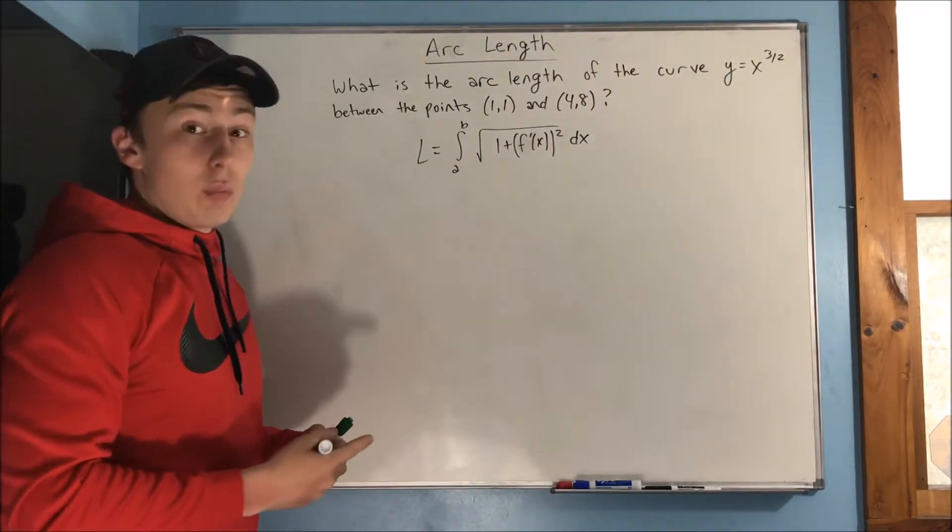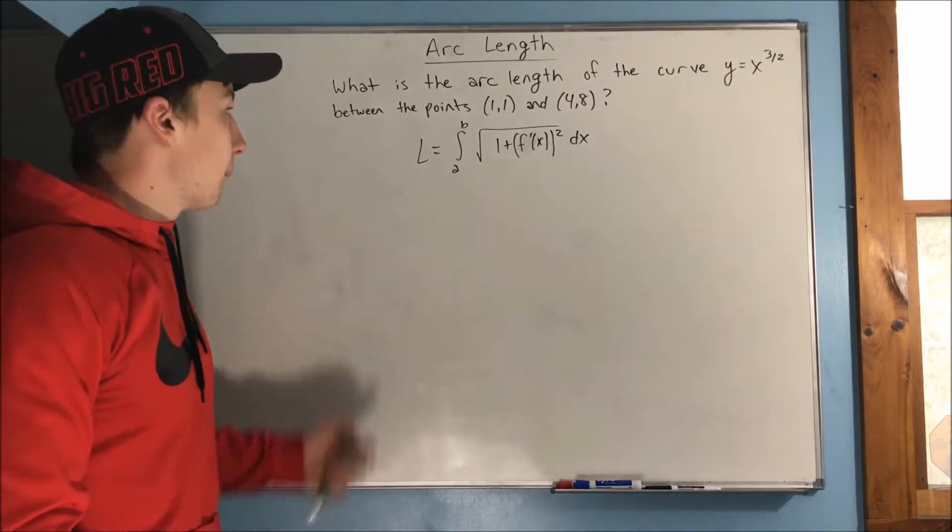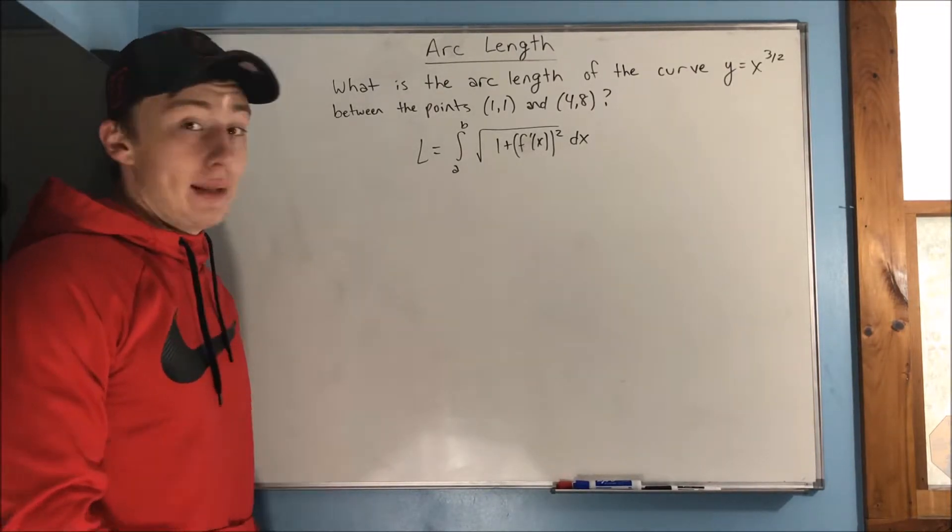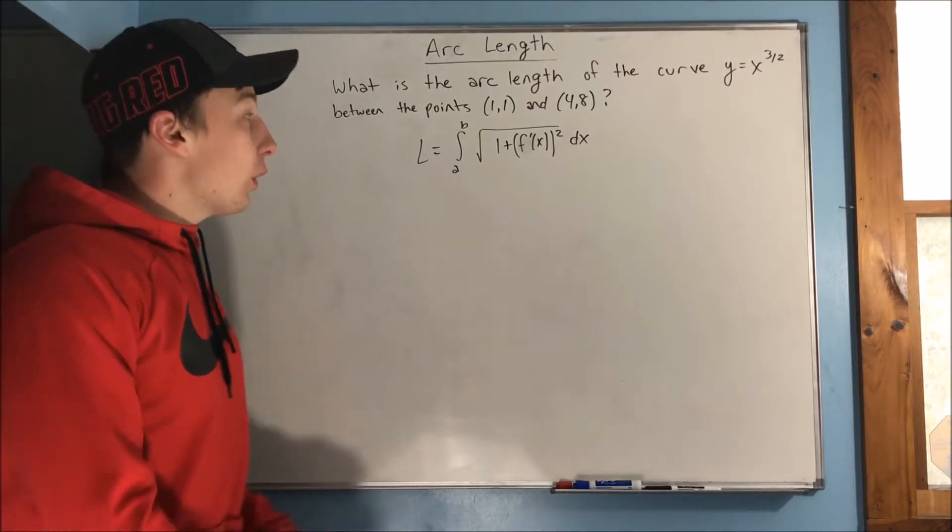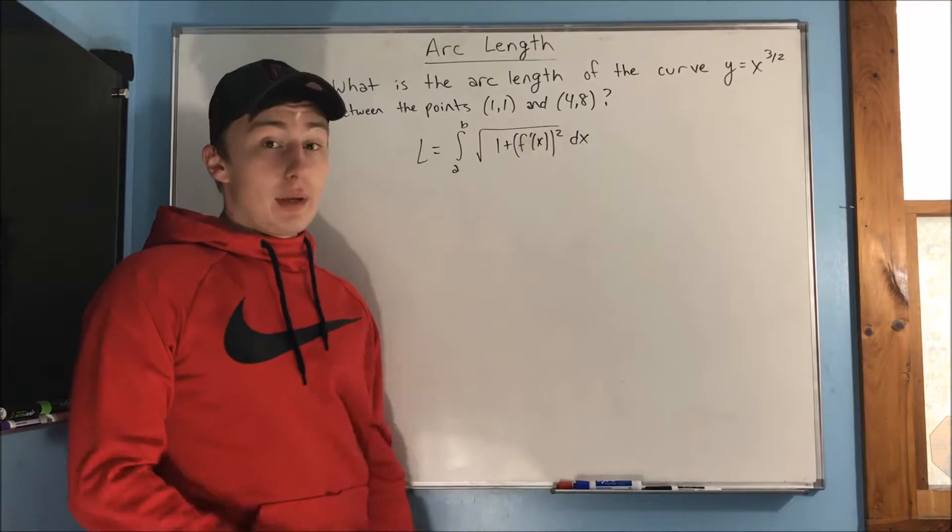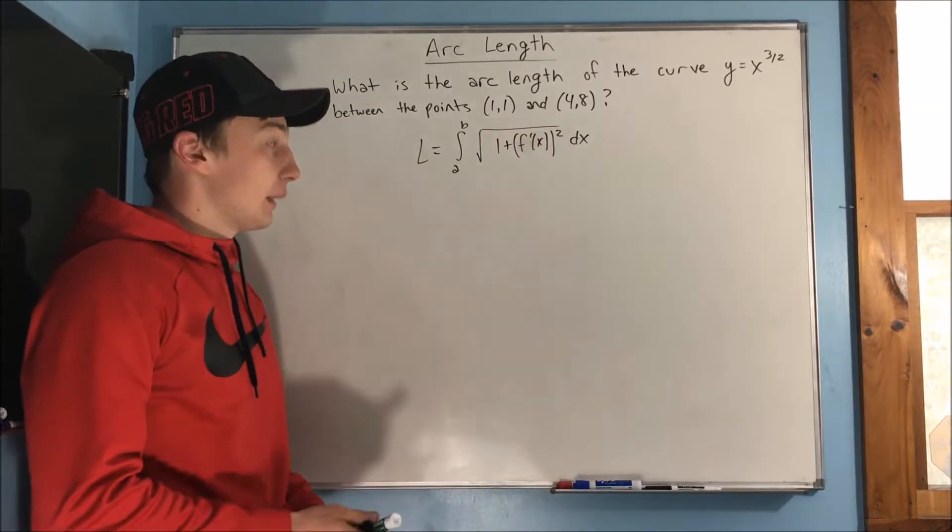So we have our problem up on the board here: what is the arc length of the curve y equals x to the 3 halves between the points (1,1) and (4,8)? So we have our formula up on the board here, and of course you can also write dy/dx as f prime of x, so I figured I'd throw a different notation in there so you can get comfortable with that as well.